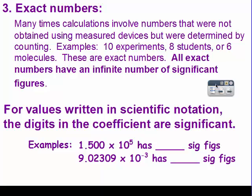Sometimes we don't measure something, we just count it — so 10 experiments, eight students, six molecules. All of those are exact numbers because they were counted, and so they have an infinite number of significant figures. When you're trying to determine what number has the lowest number of significant figures, you never look at numbers that are exact.